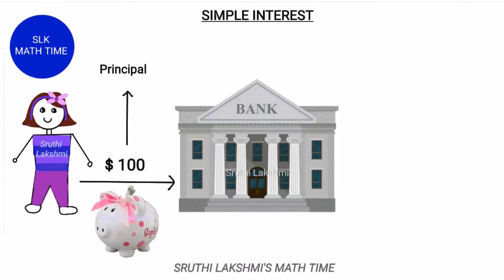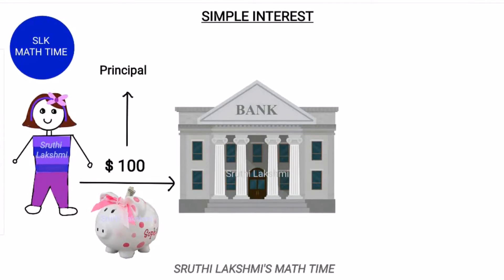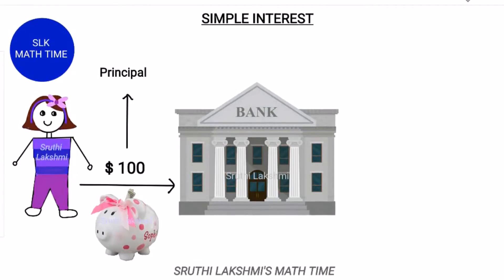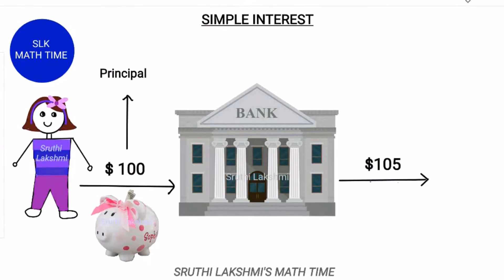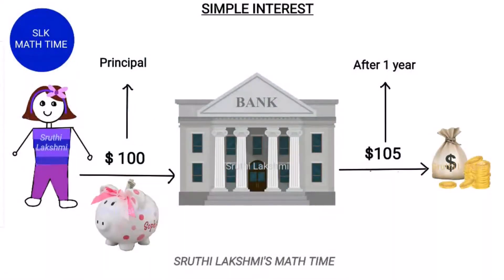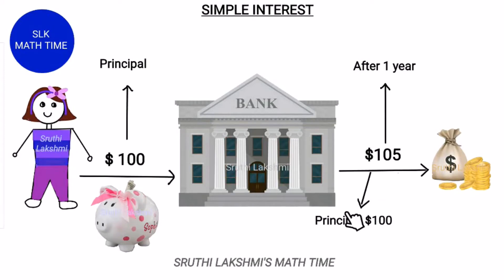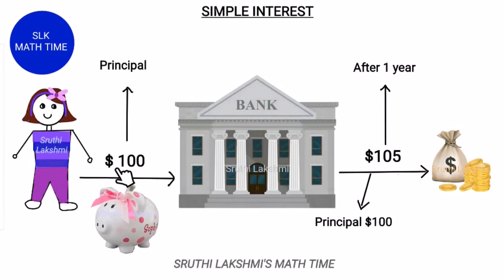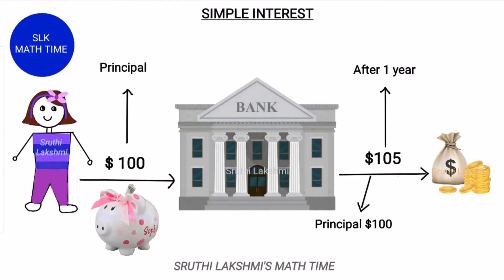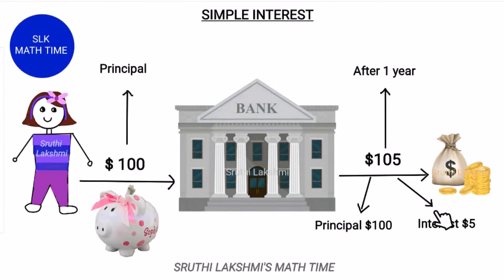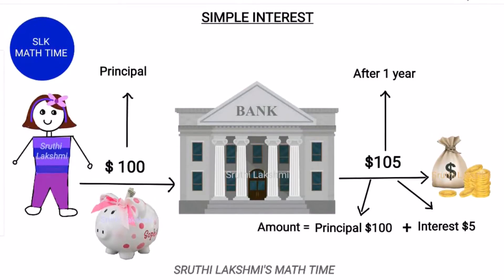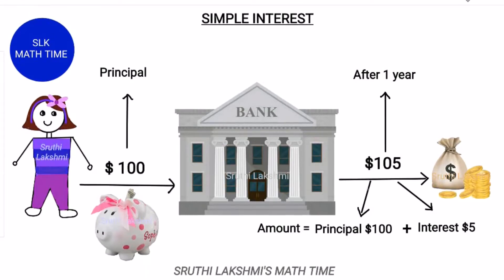The banker asked her how long she wanted to deposit her money. Sophia said, one year. After the end of the year, the bank gave her $105. The $100 is the principal, or the amount she gave to the bank for deposit, and the $5 is the interest.